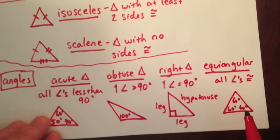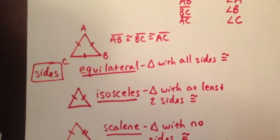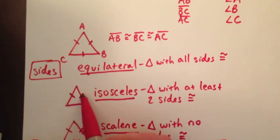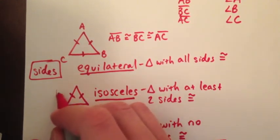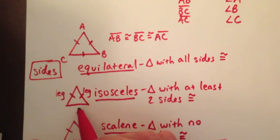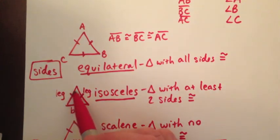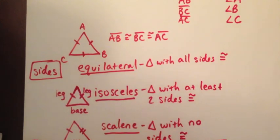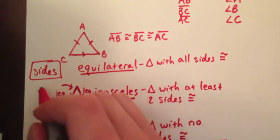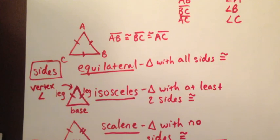Going back to the isosceles triangle — a bit of vocabulary. In an isosceles triangle, the two sides that are congruent are called the legs. The third side, typically the bottom, is called the base. The angle created by the two legs is called the vertex angle. That's how you classify a triangle.